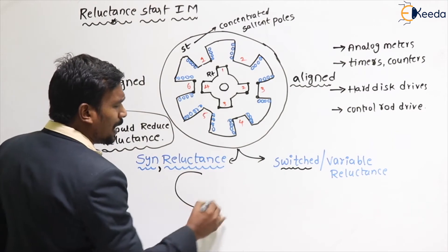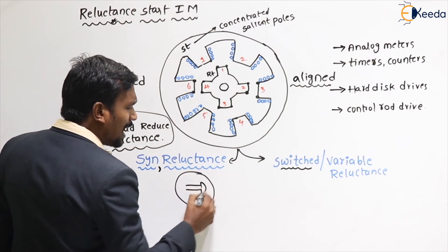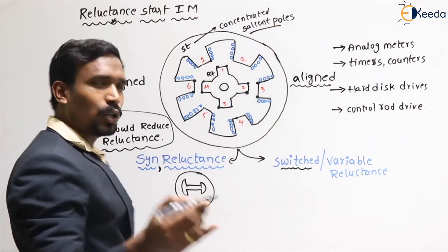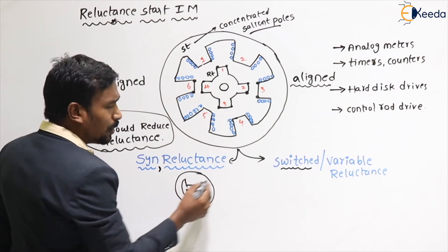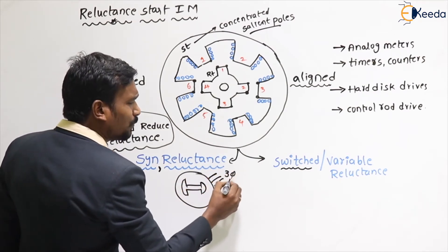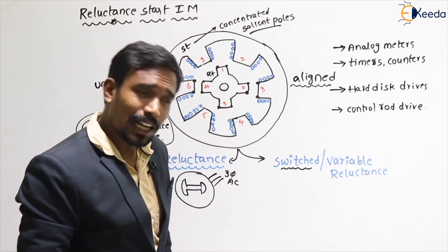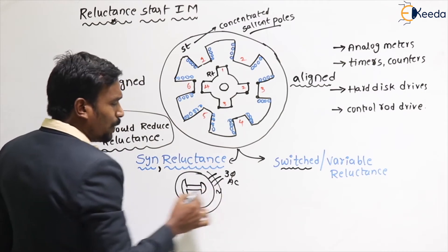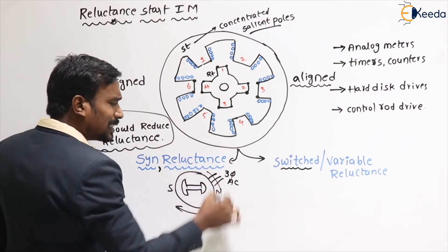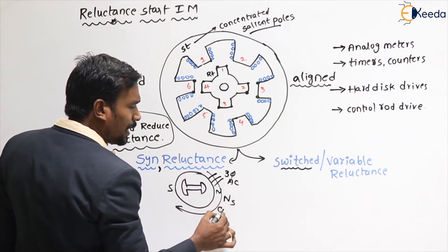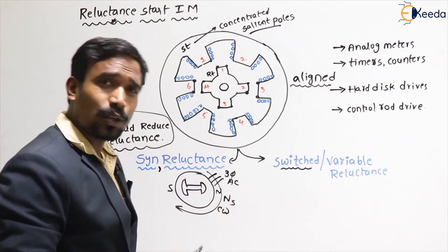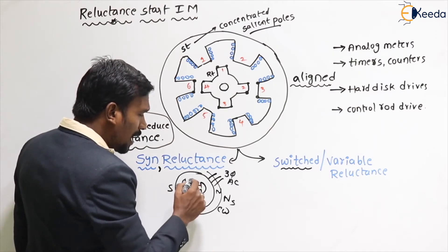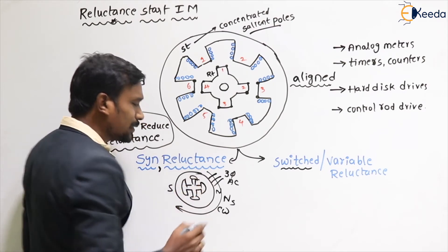The synchronous reluctance motor is essentially a salient pole motor. In this salient pole motor, the stator is given a three-phase AC supply, which produces a magnetic field that rotates in the clockwise direction with synchronous speed. However, the poles or field winding should not be connected to any supply.